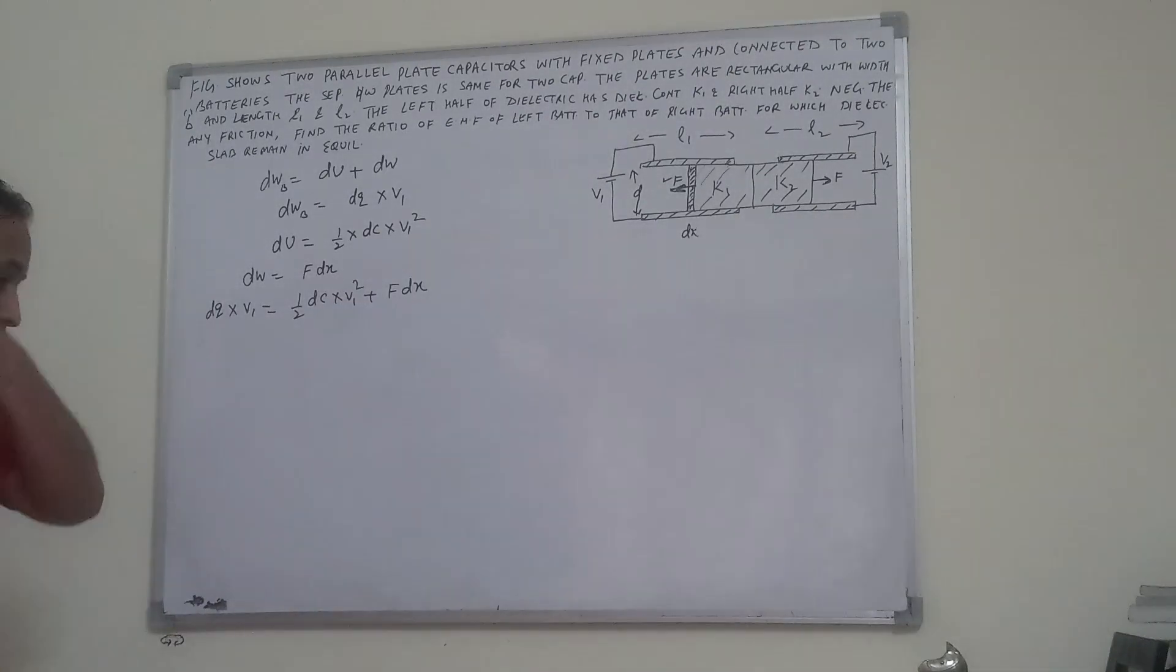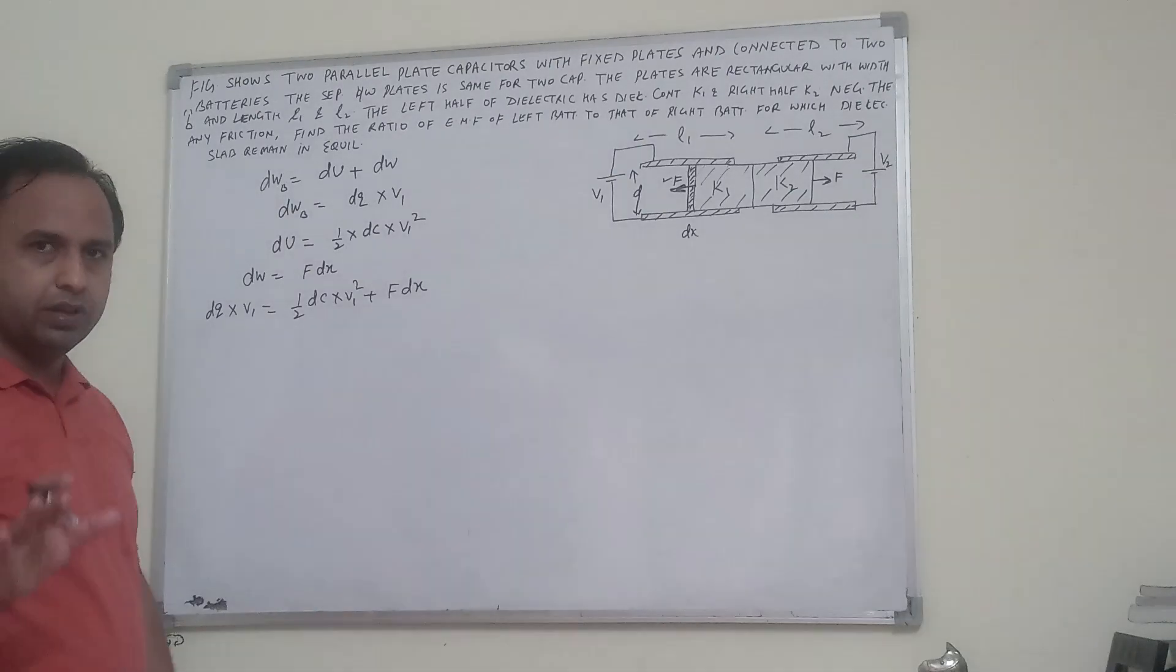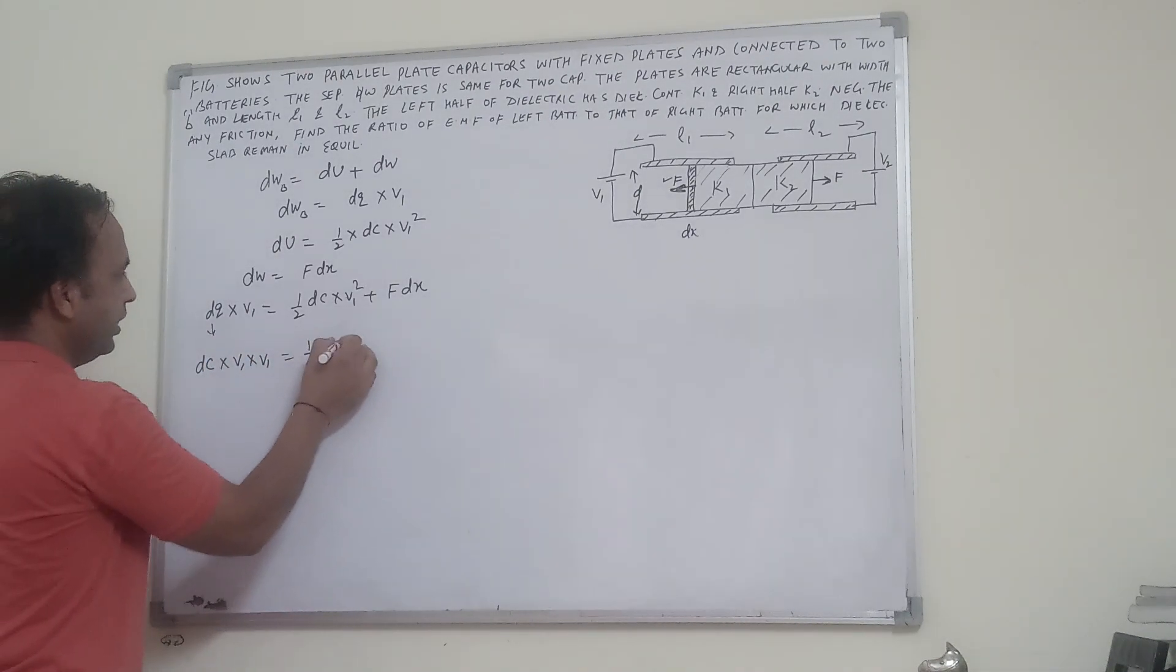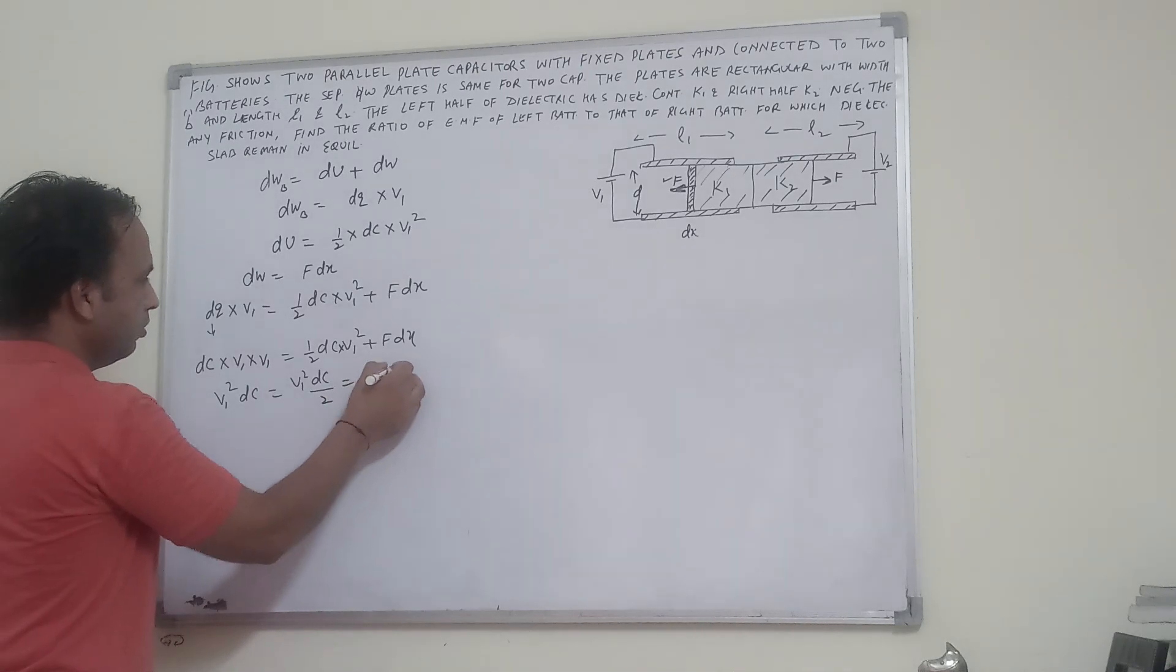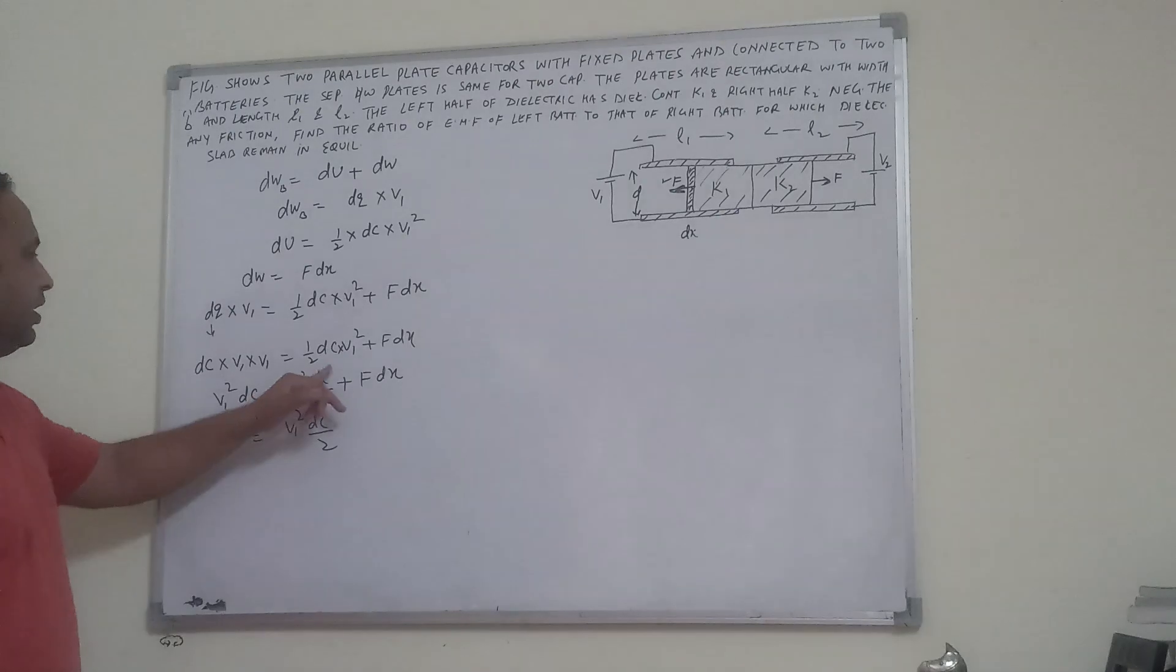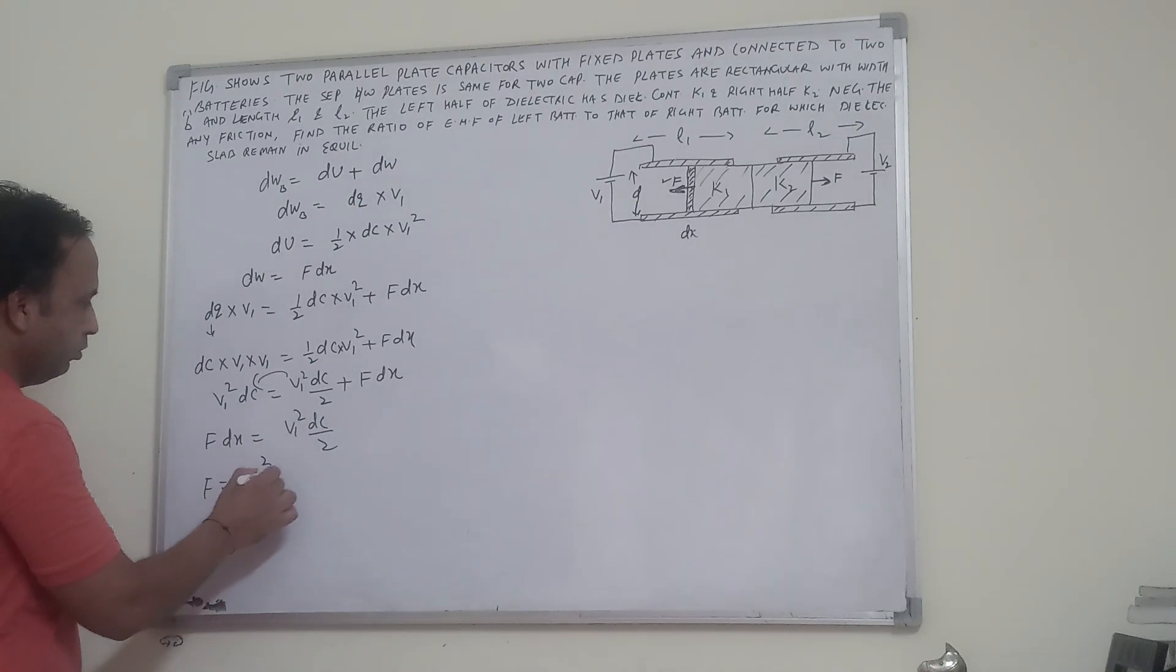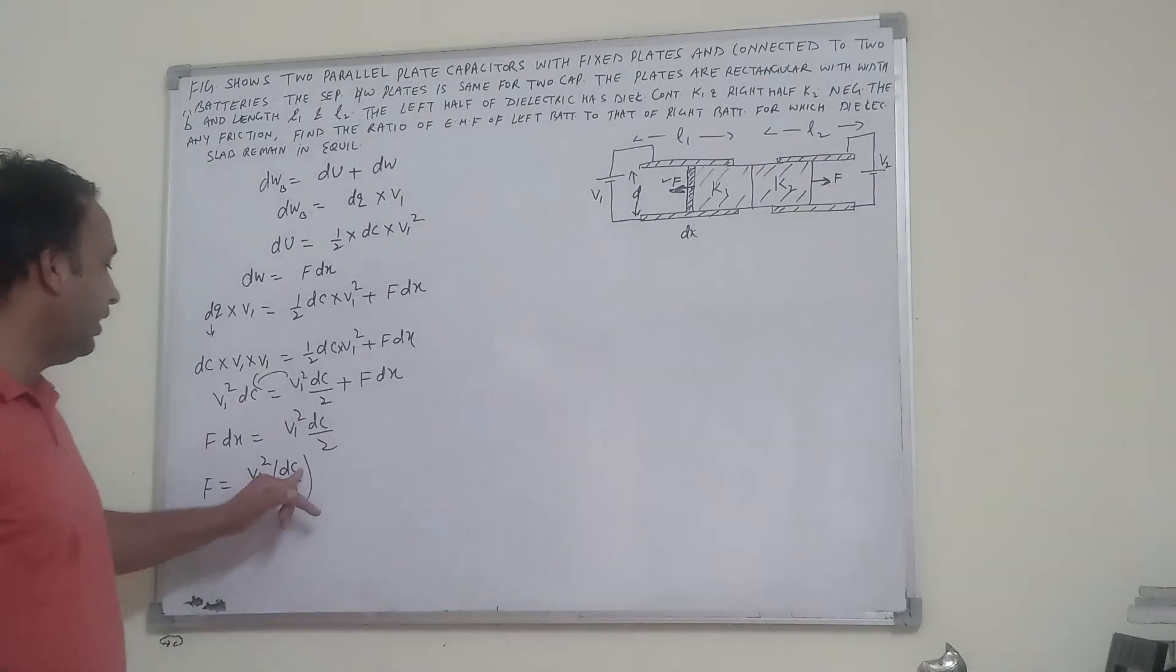Since charge q is equal to CV, then dq equals dC into voltage. This becomes V1 square dC, which gives us half dC V1 square plus F dx. So F into dx equals V1 square dC by 2 plus F dx. Therefore F is equal to V1 square by 2 into dC by dx.